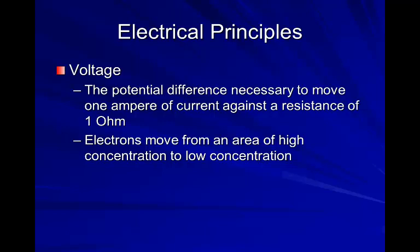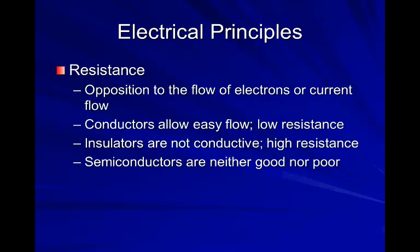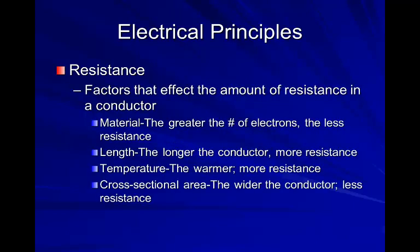Electrons move from an area of high concentration to an area of low concentration. Resistance is the opposition to the flow of electrons or current flow. Conductors allow easy flow and have low resistance, while insulators are not conductive and have high resistance. Semiconductors are neither good nor poor conductors. Factors affecting resistance in a conductor include: the material — the greater the number of electrons, the less the resistance; the length — the longer the conductor, the more the resistance; the temperature — the warmer, the more resistance; and cross-sectional area — the wider the conductor, the less the resistance.